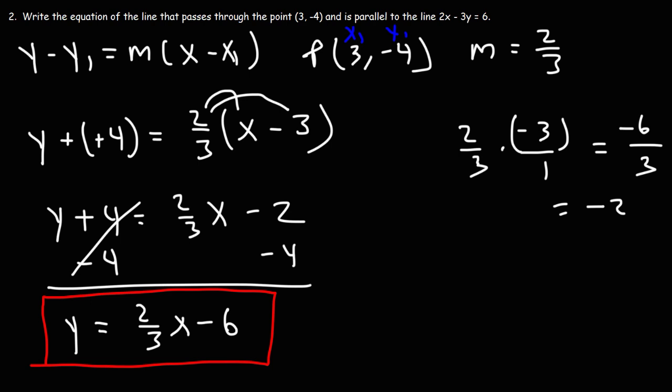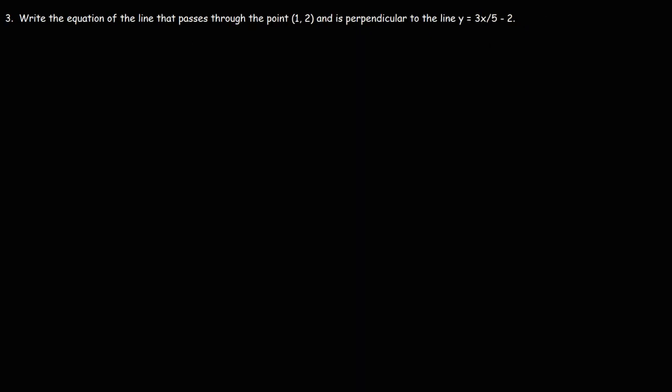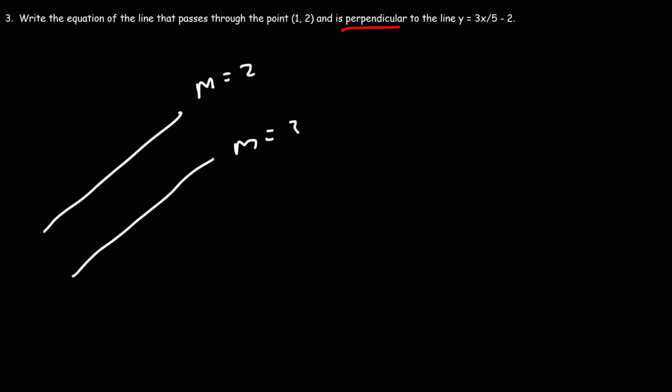Because the lines are parallel, the slopes are the same. Now let's move on to the last question: write the equation of the line that passes through the point (1, 2) and is perpendicular to the line y equals 3/5 times x minus 2.